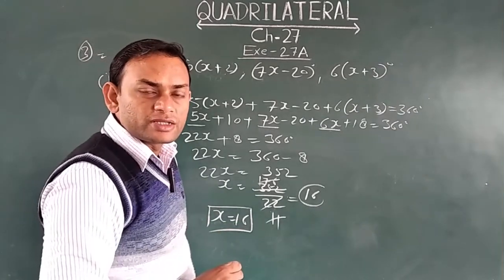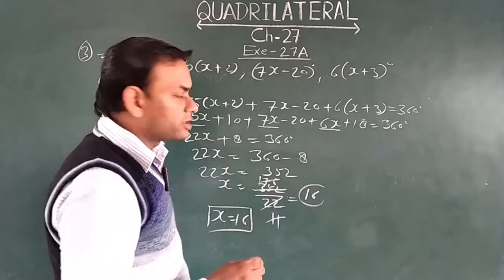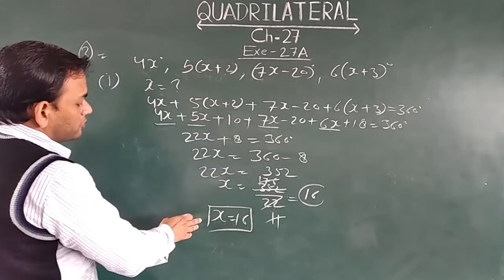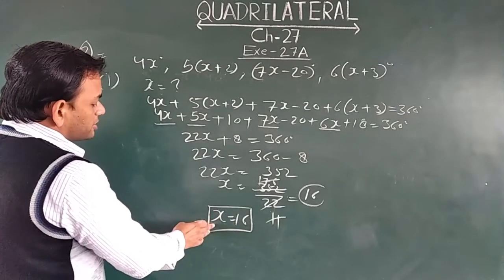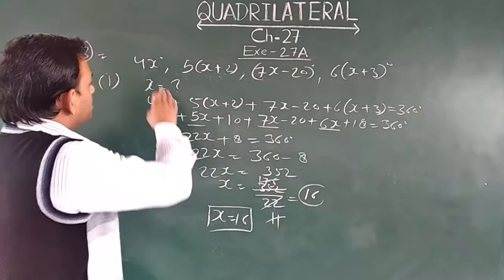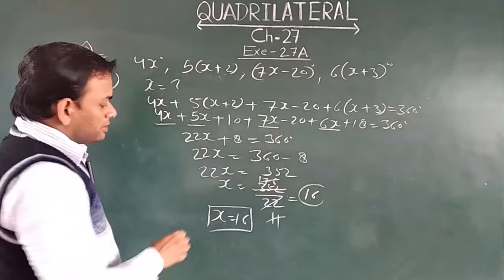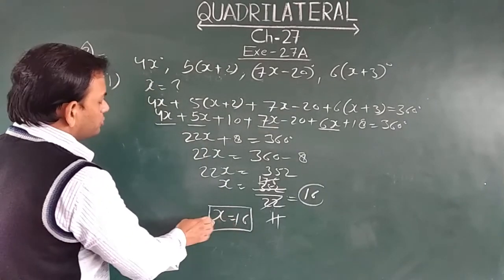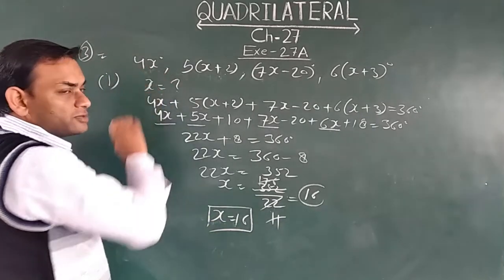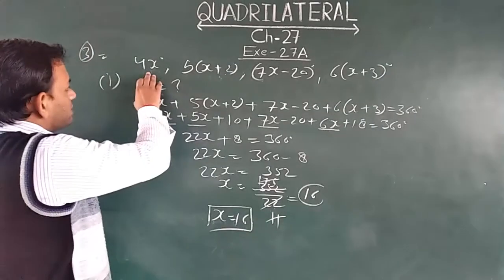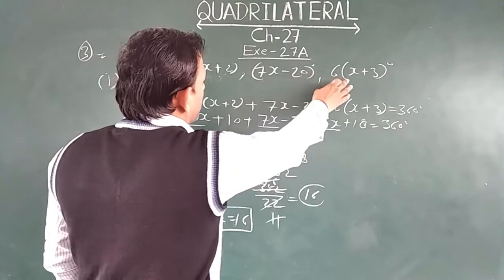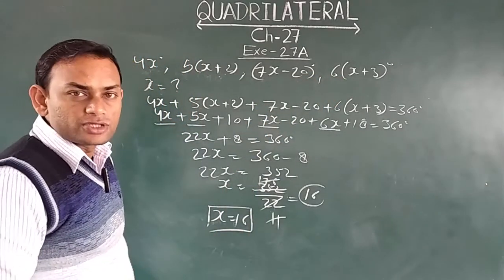The second part asks: find the angles of the quadrilateral. We have x equal to 16, so we put the value of x into each angle one by one. For the first angle: 4x equals 4 times 16 equals 64 degrees. Similarly, you put x equals 16 into 5x plus 2, then 7x minus 20, and finally 6x plus 3 to get each angle in degrees.